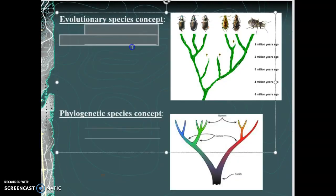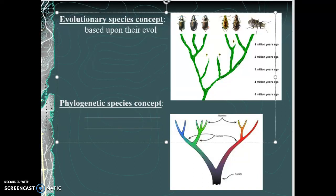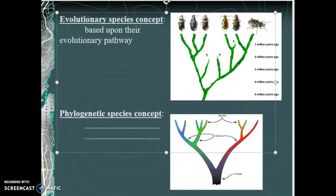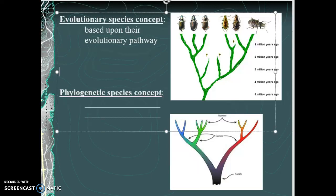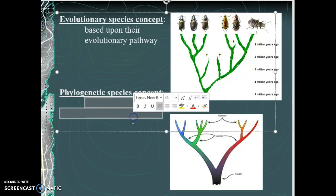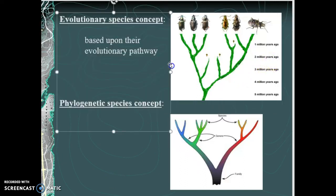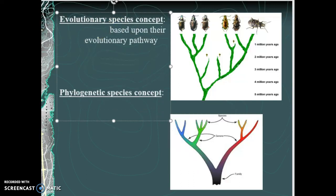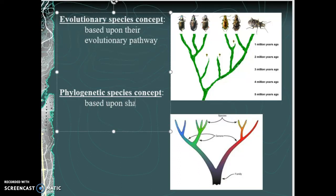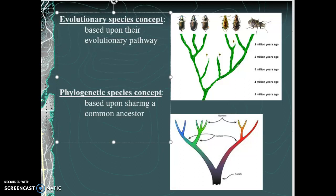Another way to define species is through the evolutionary species concept, which is based upon their evolutionary pathway — how that particular species evolved over the course of millions and millions of years. There's also the phylogenetic concept: do you share a common ancestor? If so, you would be considered the same species.